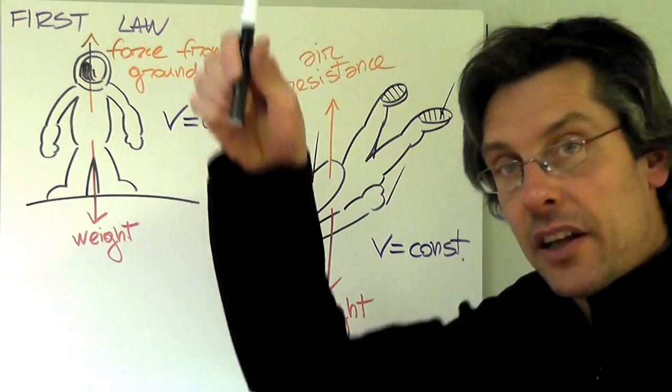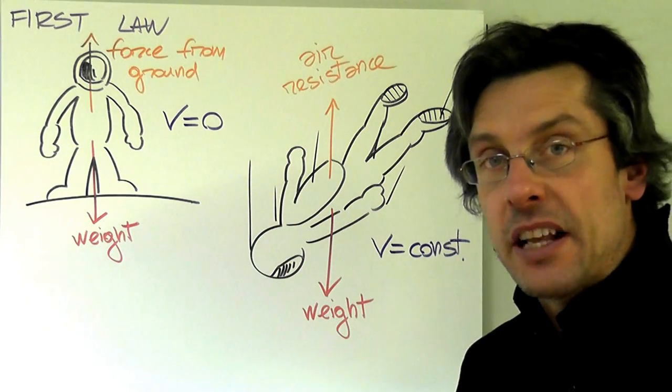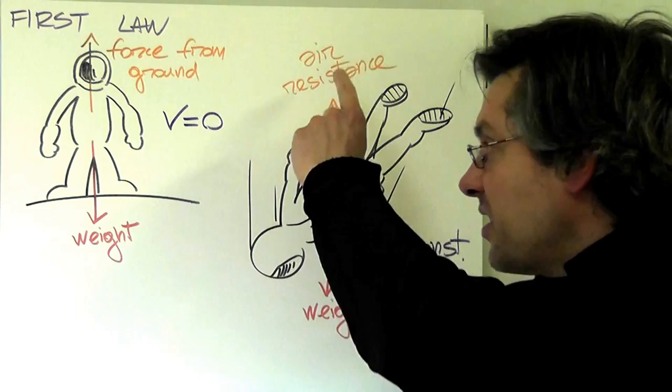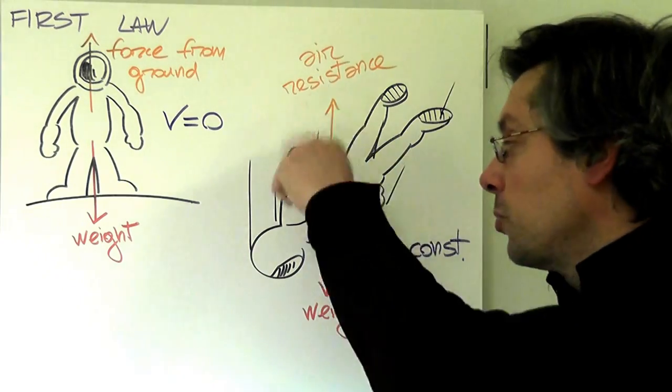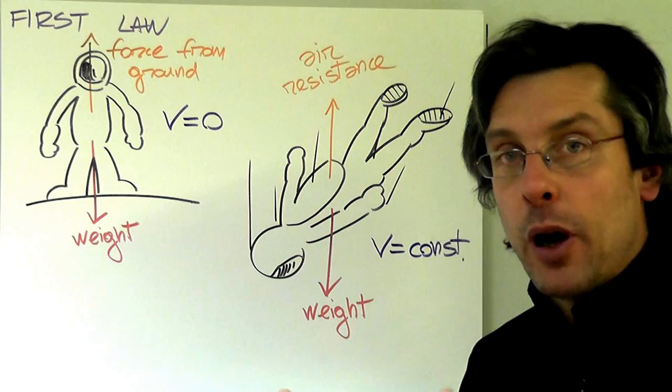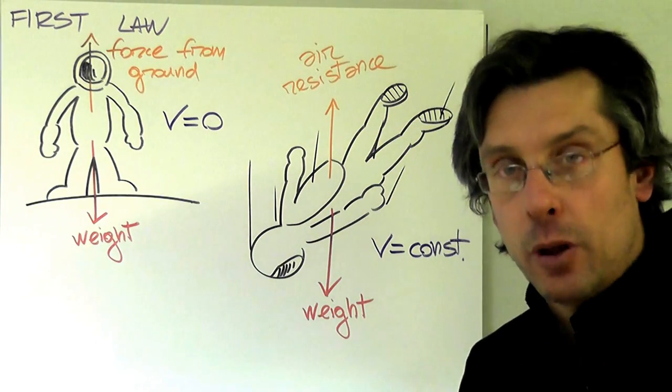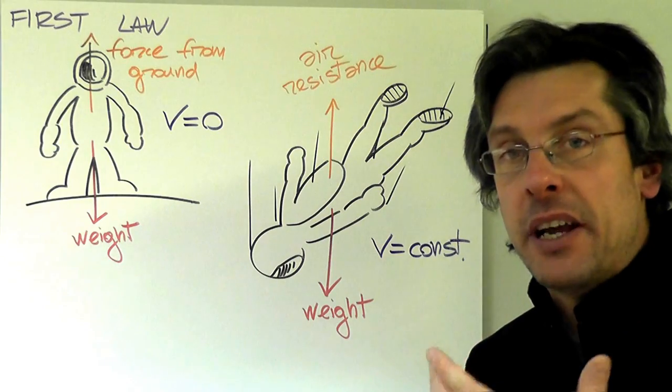As Felix was falling downward, he was still affected by his weight. But eventually, at some point, air resistance managed to balance Felix's weight. At that point, we say that a jumper, a skydiver, has reached terminal velocity. What does it mean?